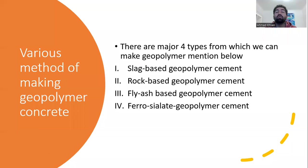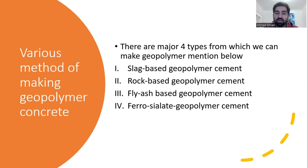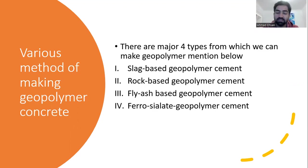First, I have to tell you how we can make geopolymer and the various methods of making it. There are four types from which you can make geopolymer: first is slag-based geopolymer concrete, second is rock-based geopolymer concrete, third is geopolymer concrete via fly ash, and fourth is ferrocellite geopolymer concrete.